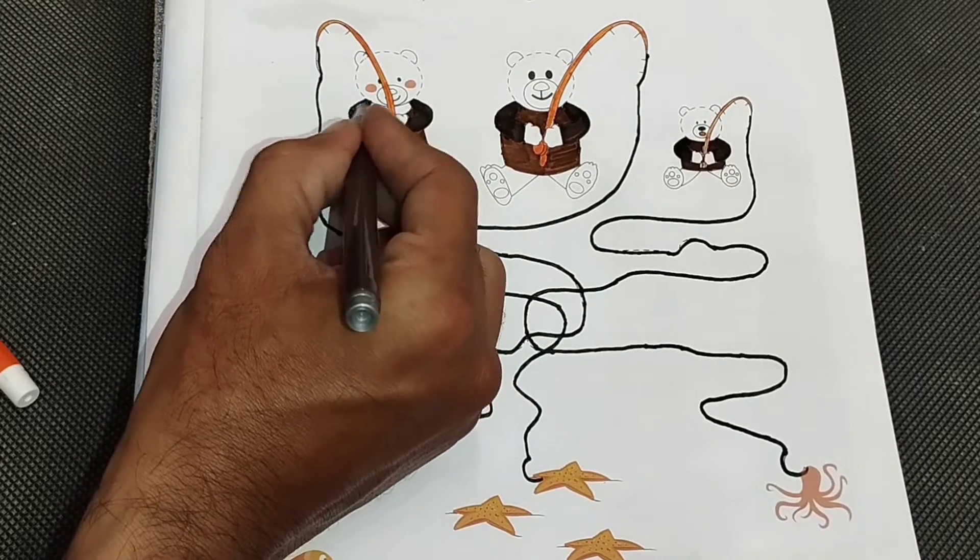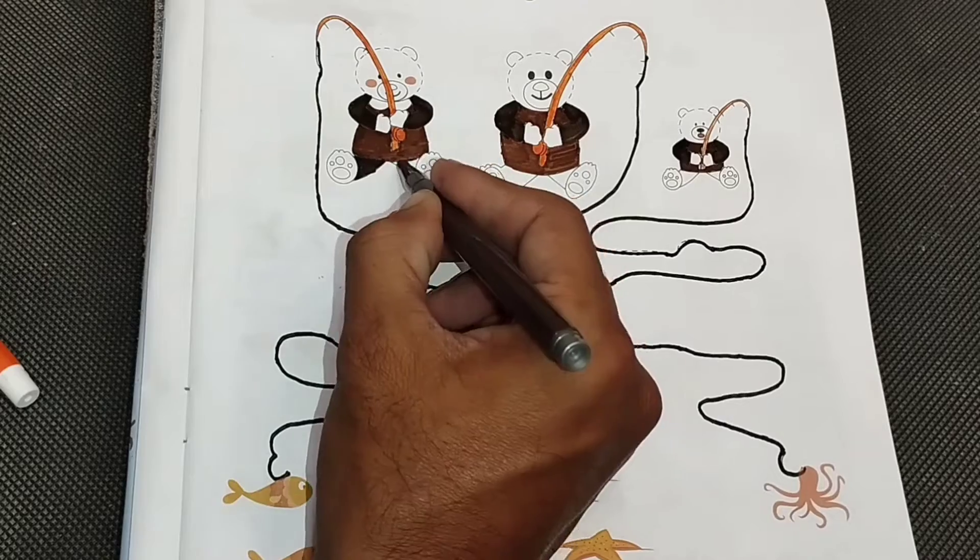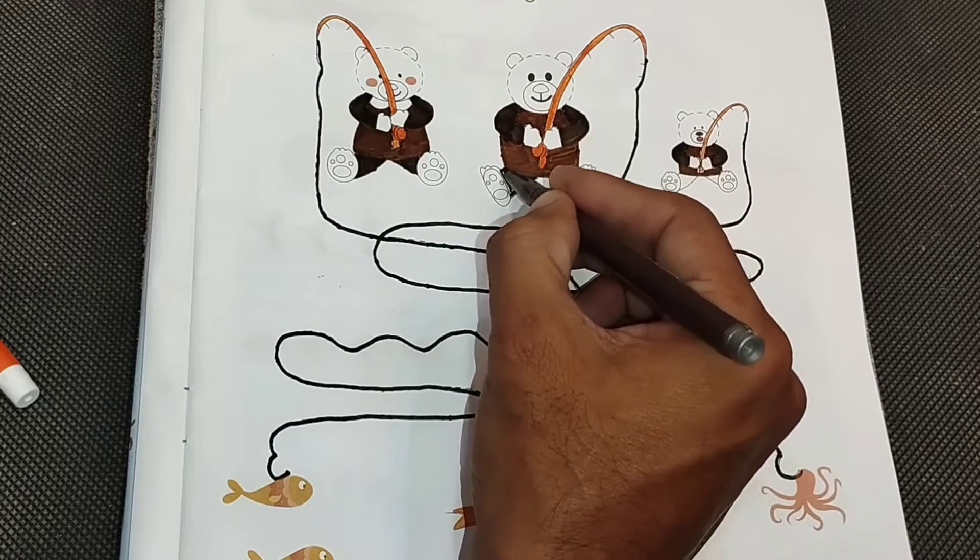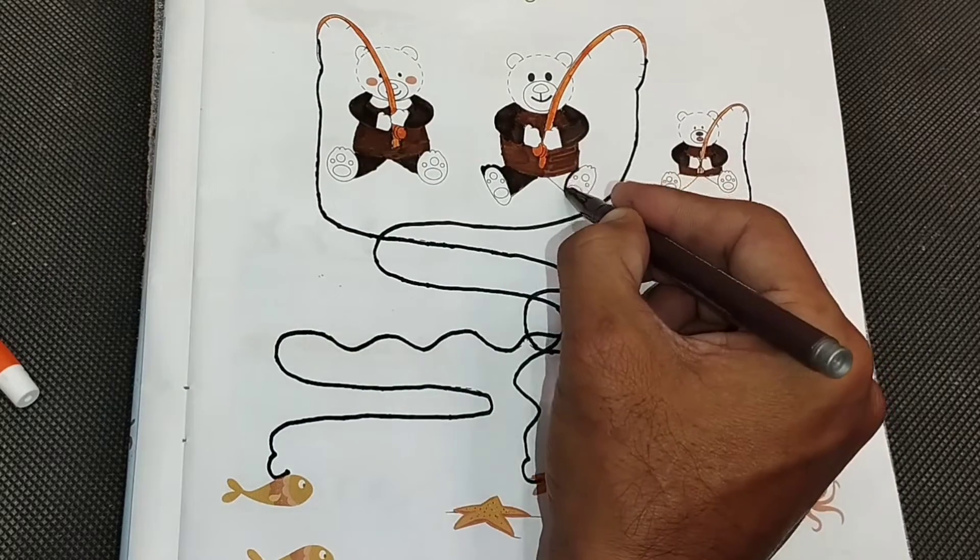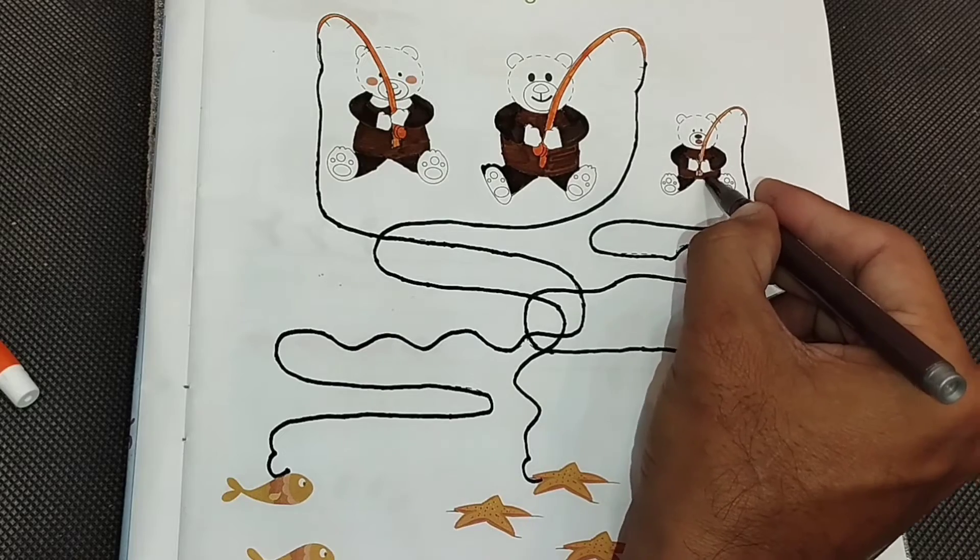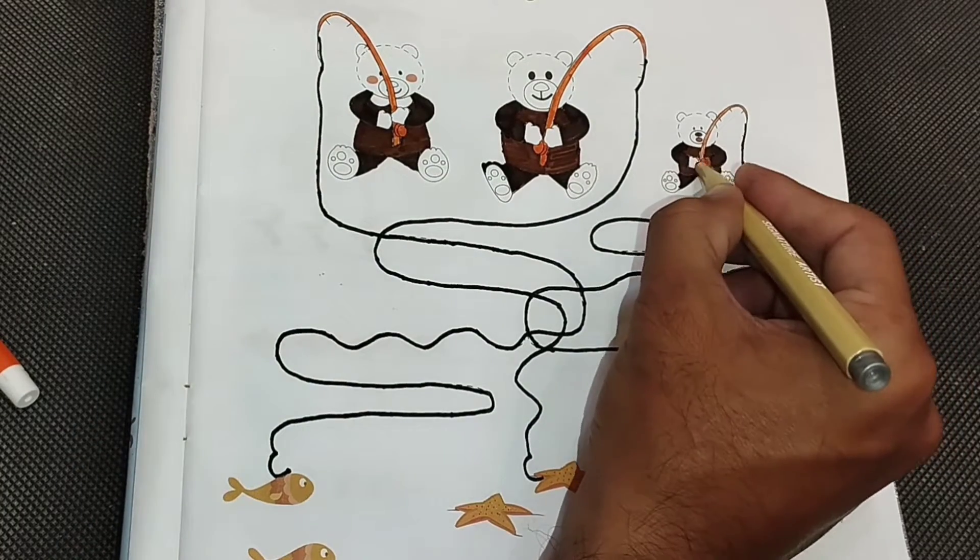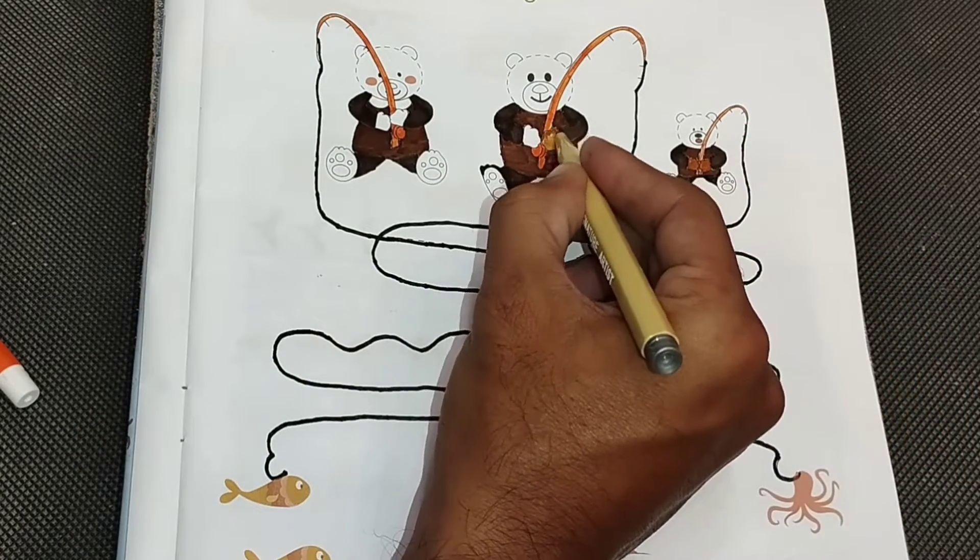M is for Monkey, M-M-Monkey. N is for No, N-N-No. O is for Octopus, O-O-Octopus. P is for Pig, P-P-Pig.